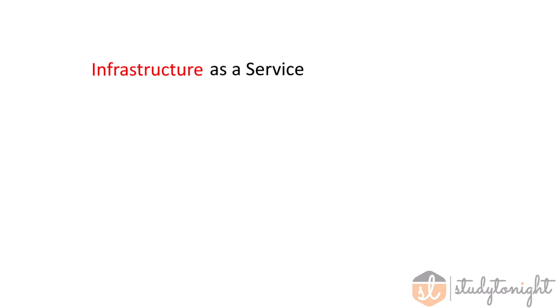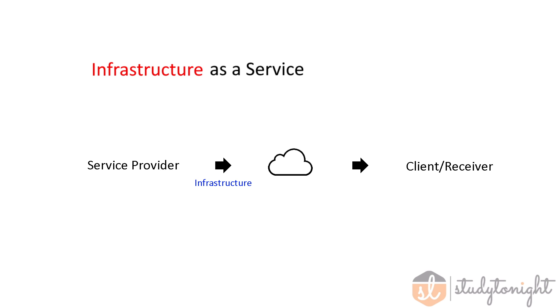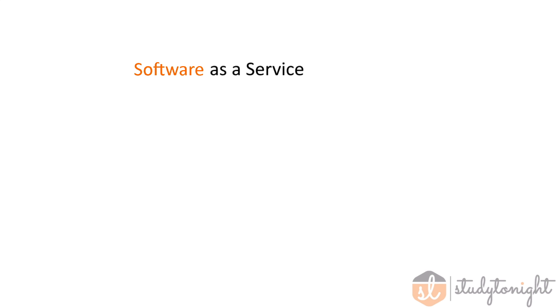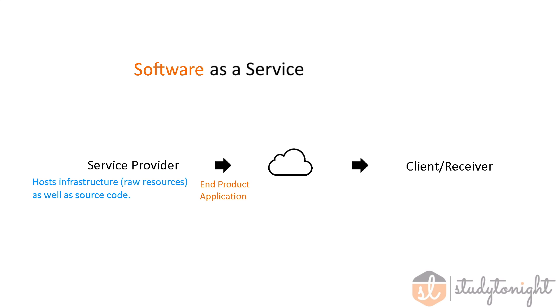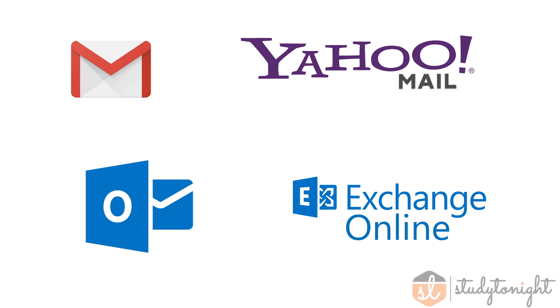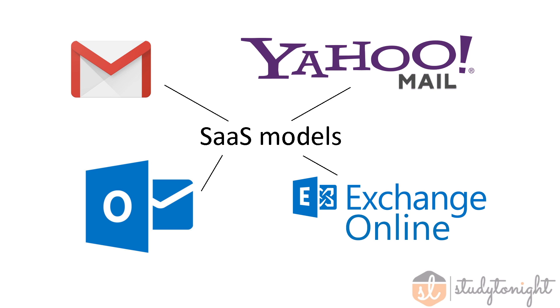In infrastructure as a service, the provider gives you the infrastructure you need to work with — that means access to servers, storage, and networking hardware. In software as a service, the provider hosts everything from the infrastructure to the applications and their management, and you simply act as an end user to what the provider has to offer. Most popular email services are SaaS models, since they offer something and you use it.